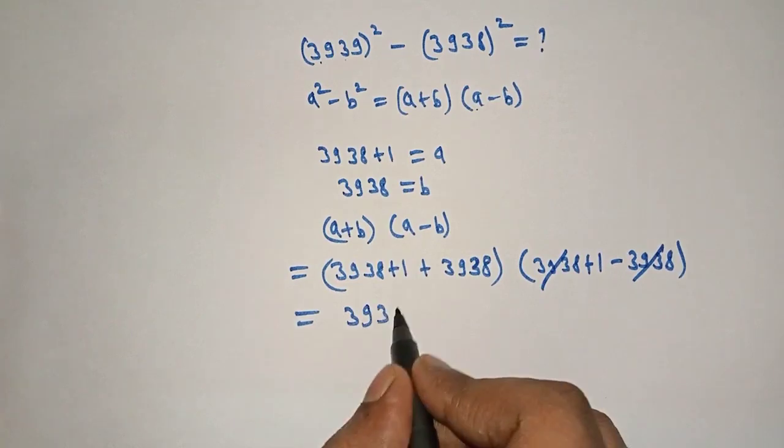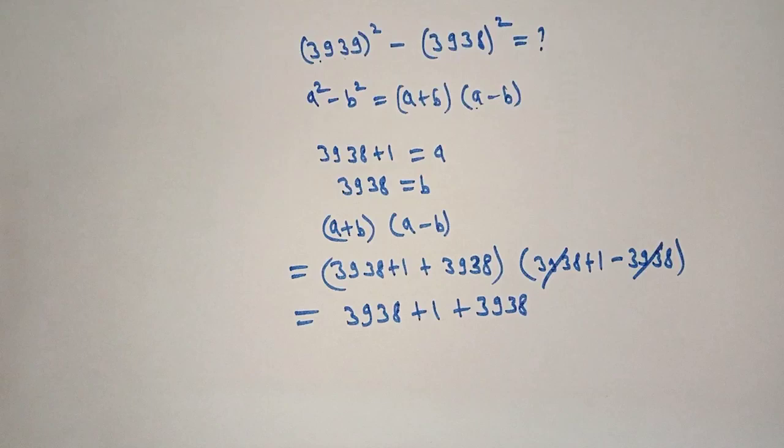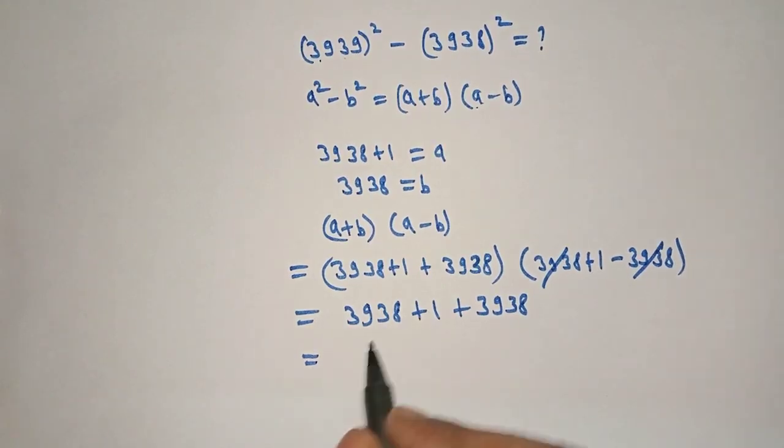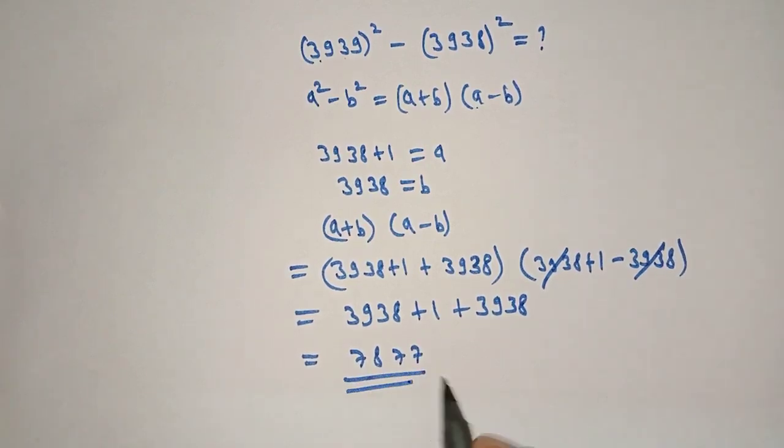So 3938 plus 1 plus 3938 will remain. Now, this is equal to 7877. This is our right answer.